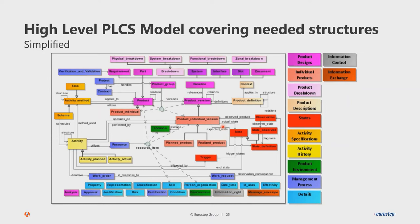The overview of the information model shows core concepts at the center: the product, the product version, and the product definition. These three entities are the core of the entire STEP standard for configuration management — separating information about master products, different product versions, and product definitions. These are very abstract entities; the product can be hardware, software, systems, assets, infrastructure, and so on.